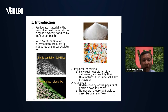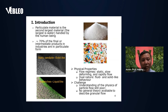So what is a particulate system? We can find such materials easily in nature and industry — for example, sand, sugar, rice, soya, dust. Particulate material is actually the second largest material handled by human beings. The largest one is water, and around 70% of raw and manufactured products in industry are in particulate form. So the study of particulate matter is very important.